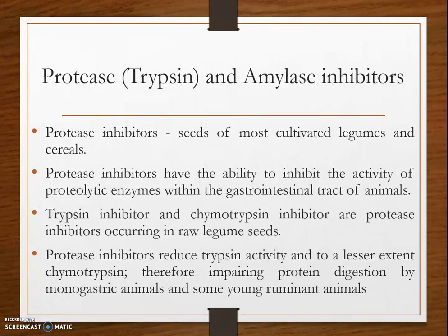The trypsin inhibitor reduces trypsin activity and, to a lesser extent, the activity of chymotrypsin, thereby impairing protein digestion by monogastric animals and some young ruminant animals. In summary, the anti-nutritional factor trypsin inhibitor reduces the activity of trypsin, impairing protein digestion in young ruminants and monogastric animals.